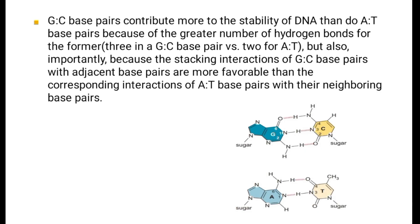G-C base pairs contribute more to the stability of DNA than do A-T base pairs because of the greater number of hydrogen bonds for the former—3 in a G-C base pair and 2 for A-T—but also, importantly, because the stacking interactions of G-C base pairs with adjacent base pairs are more favorable than the corresponding interactions of A-T base pairs with their neighboring base pairs.